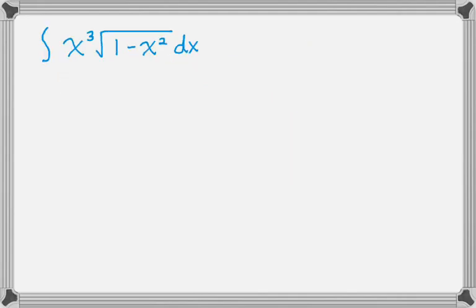So we have the integral of x cubed radical 1 minus x squared dx. So it's one of those where there's nothing really obvious that you should do. So what I usually do is let whatever's in the radical equal u. So I'm going to go with u equals 1 minus x squared.